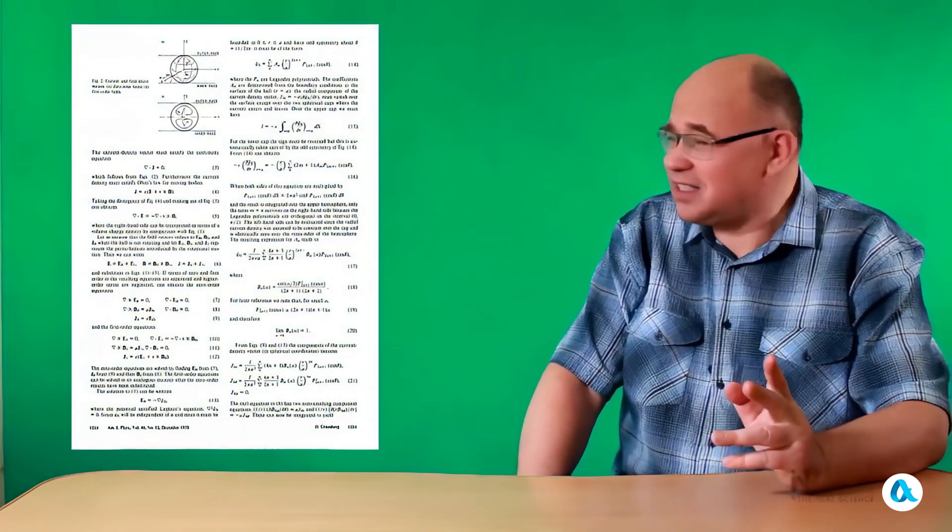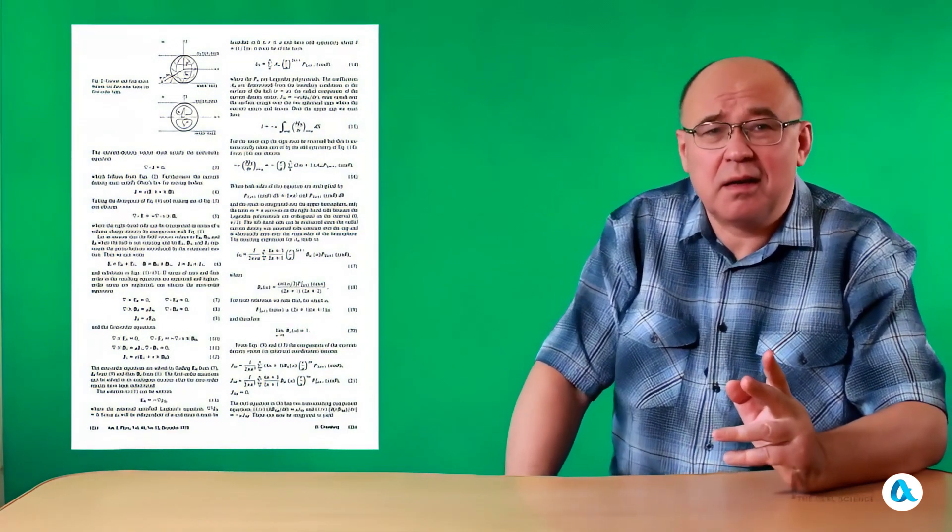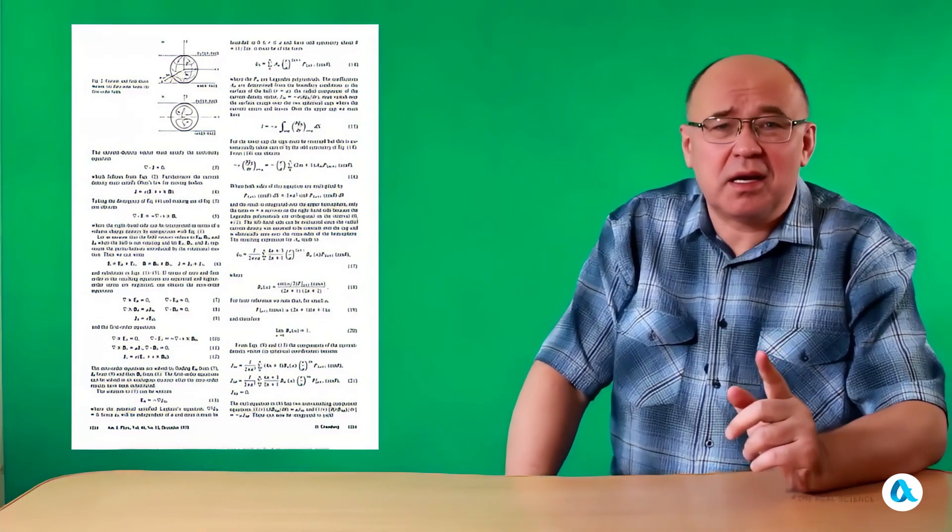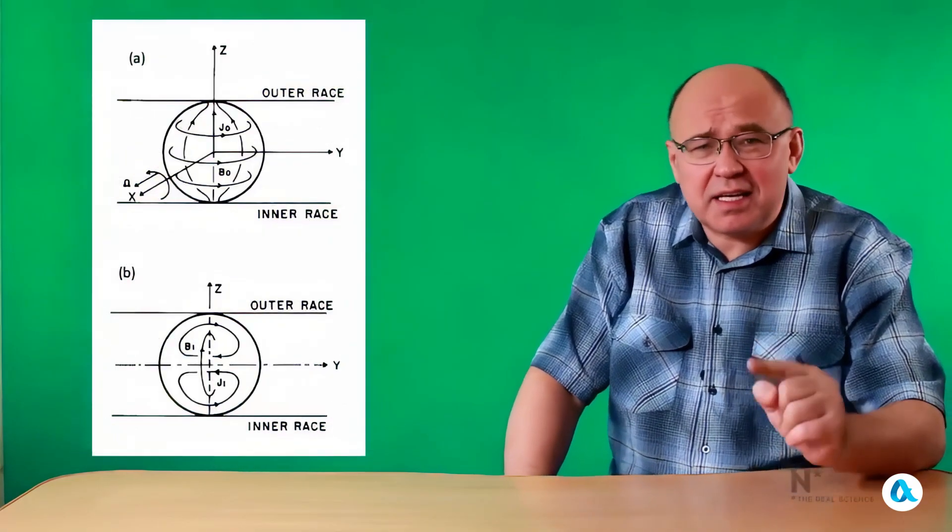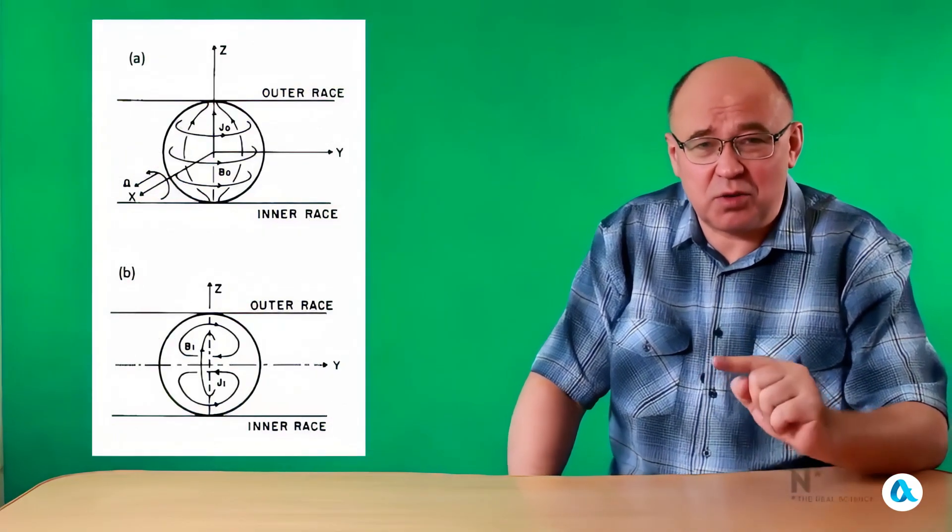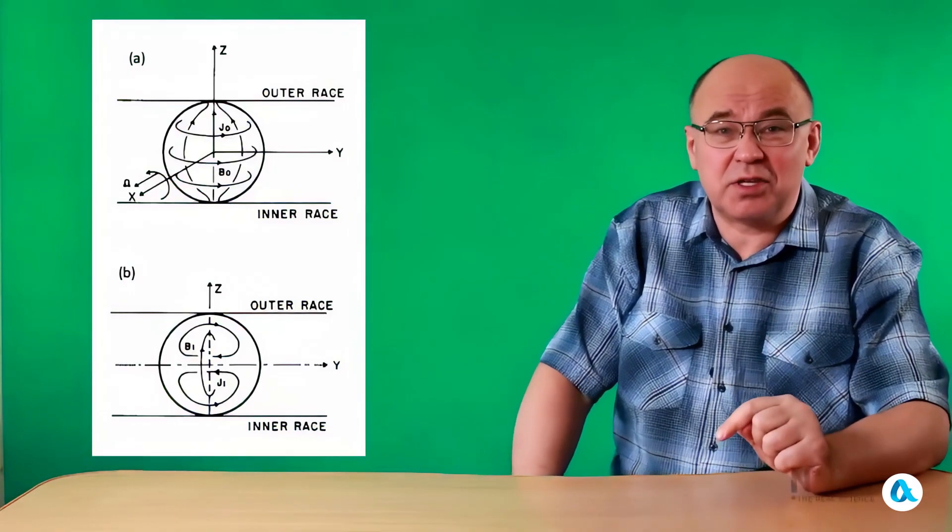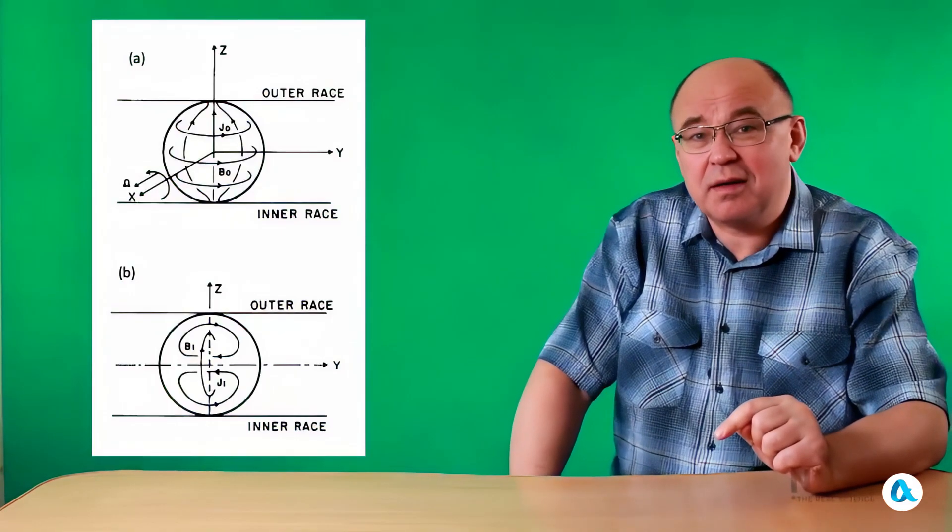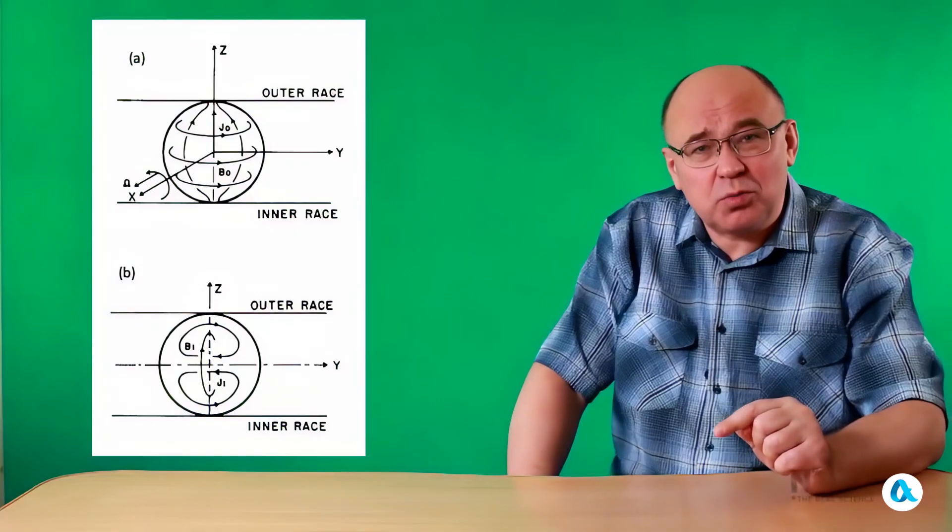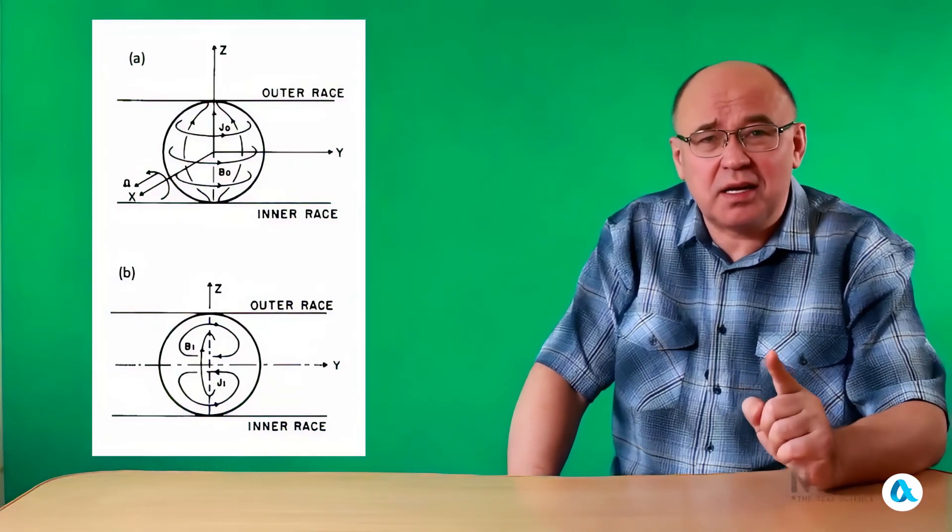The second alternative explanation was presented in several articles containing a great many mathematical formulas. The authors of these articles tried to examine the interaction between the currents flowing through the rotating balls and the magnetic fields induced in these balls. However, there are two fundamental objections that can be raised against these theories.